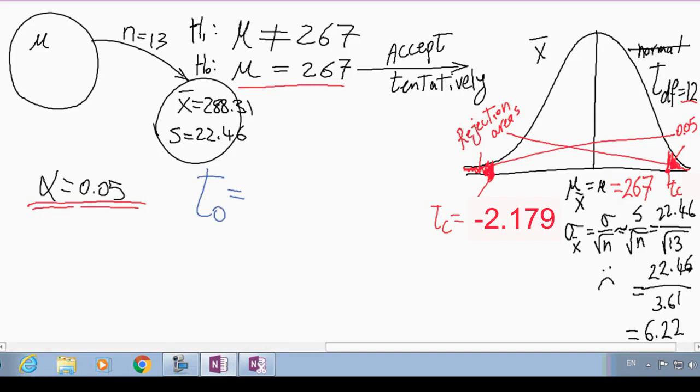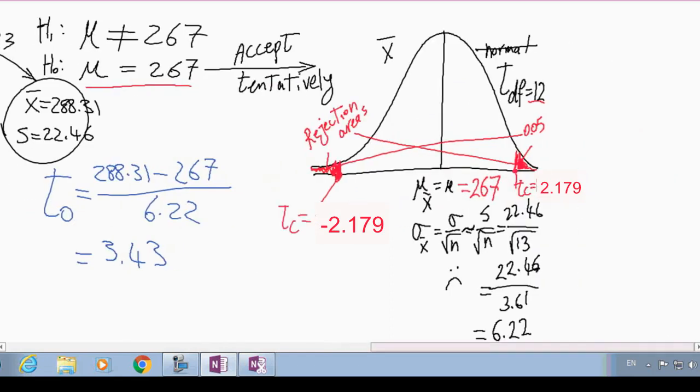The T of our observation, our observation is 288. So how many standard deviations is it far from the mean? We accepted in the null hypothesis, it is 267 and the standard deviation is 6.22. How far is our observation? 3.43. So we are three standard deviations far from the mean. So what we observe is actually here. This is 1.7. This would be 2. This would be 3. This would be 3.5. So this is the T of our observation. Way into the rejection area.